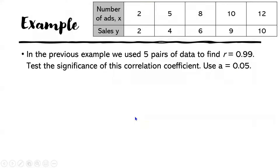Let us use a previous example about the number of advertisements and the number of sales. We have 5 pairs of data, and the computed R is 0.99, meaning there is a strong positive linear correlation. We are asked to test the significance of this correlation coefficient using an alpha of 0.05. This will be a two-tailed test.